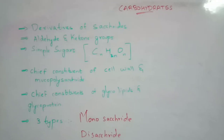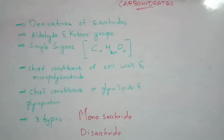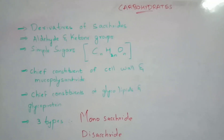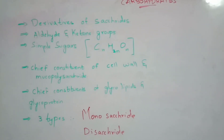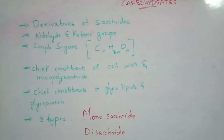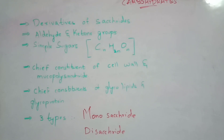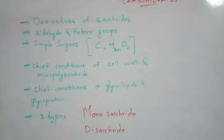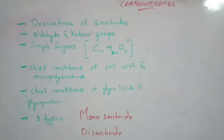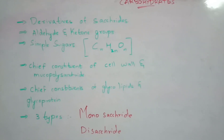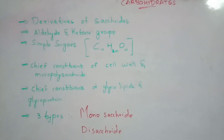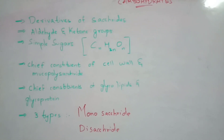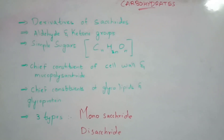As an example of the aldehyde group, take glyceraldehyde, and for the ketone group take dihydroxyacetone. I will explain these in the monosaccharide section. Coming to the third point, carbohydrates are simple sugars, and the molecular formula of carbohydrates is CₙH₂ₙOₙ.